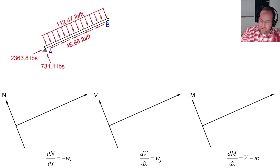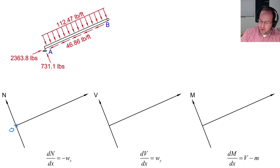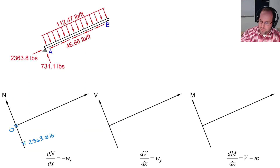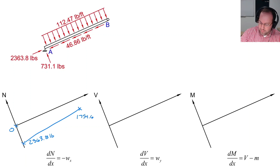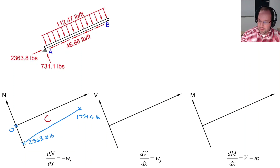Now for the axial diagram: there is a concentrated load at A and a distributed load from A to B. Starting from zero, the axial diagram sign convention flips the concentrated load, so we begin at −2363.8 pounds. The distributed axial load is in the negative direction, producing a positive slope of 46.86 lb/ft, which takes us up to +1754.6 pounds at B. The entire member is in compression.